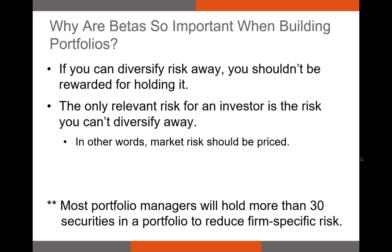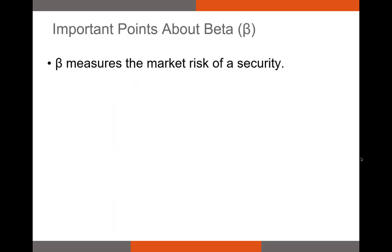Why do we care so much about beta when building a portfolio? Ideally we'll hold at least 25 to 30 different securities, each with less than perfect positive correlation. With this diversified portfolio, we don't need to worry as much about firm-specific risk — even if a firm-specific event occurs like the Chipotle E. coli outbreak, Chipotle's weight in the portfolio is so small that the damage is minor. By diversifying, we significantly reduce firm-specific risk, and because the majority of remaining risk is market risk, we focus on that.